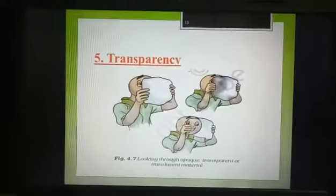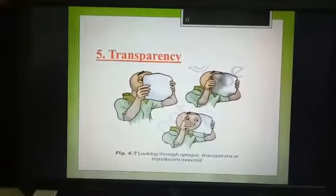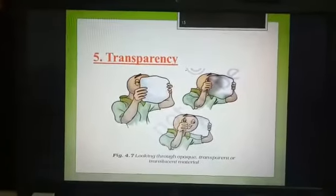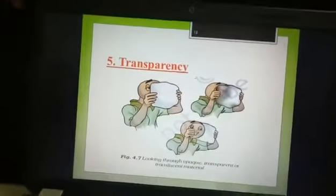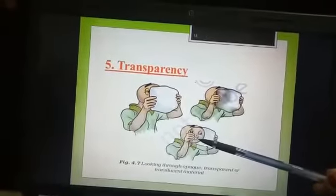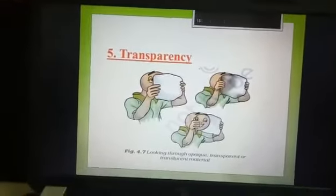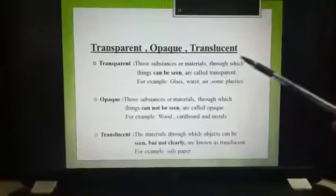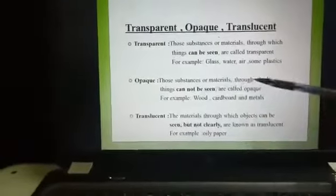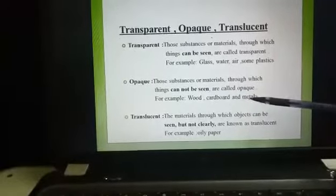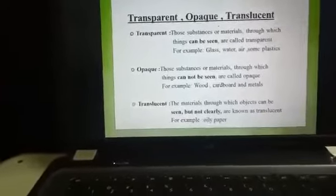The fifth property is transparency. Look at the three figures. In the first figure, we are not able to see the face of the person — that means it is opaque. In the second figure, the face is partially visible — that is translucent. In the third figure, it is totally visible — that is known as transparent. Transparent means materials through which things can be seen clearly; examples are glass, water, air, and plastics. Opaque means materials through which things cannot be seen; examples are wood, cardboard, and metals. Translucent means materials through which objects can be seen but not clearly; example is oily paper.